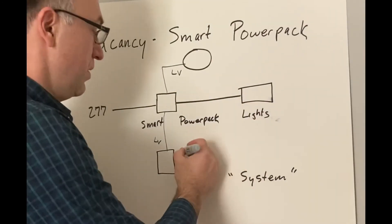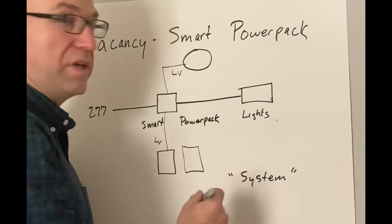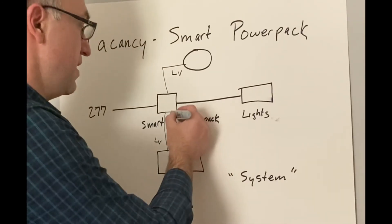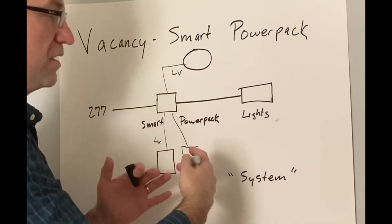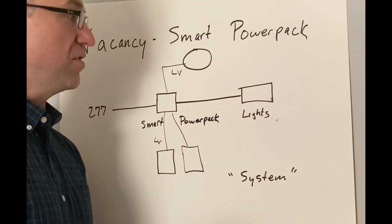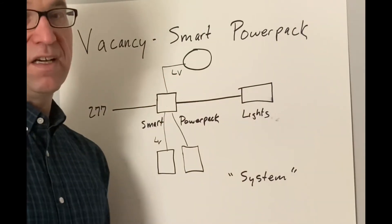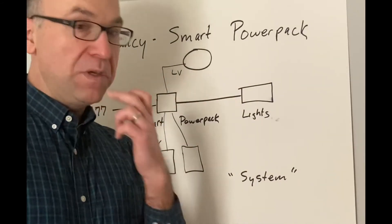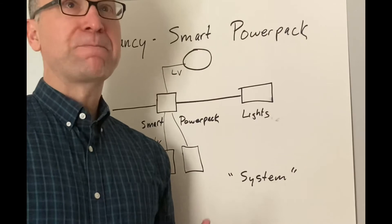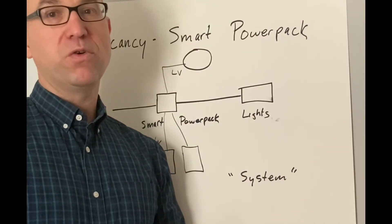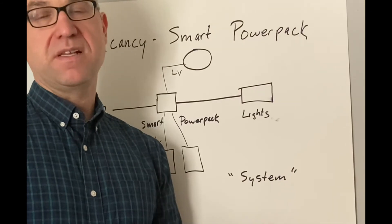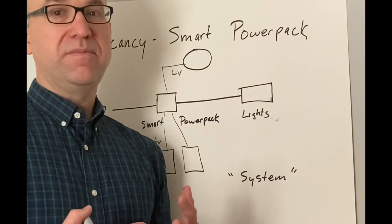And then the nice thing about the system or even that wireless part is let's say we had two switches, right? Two power packs. We can do multiple locations. So again, that's the other way that we can accomplish that setting using the smart power pack is helpful because you may have rooms that have multiple scenarios, you know, three-way, four-way switching, two sensors, three sensors, four sensors, makes it easier.